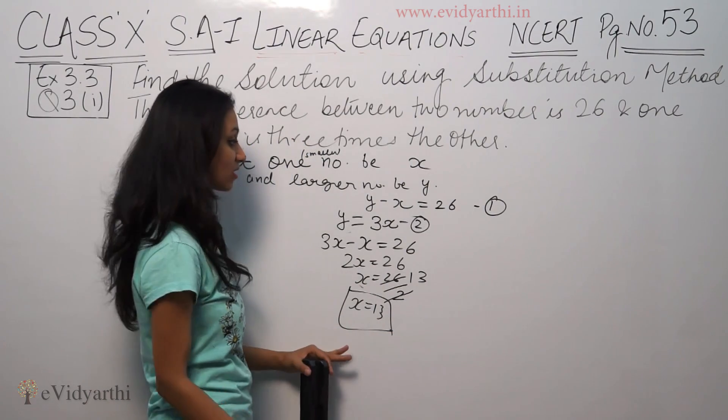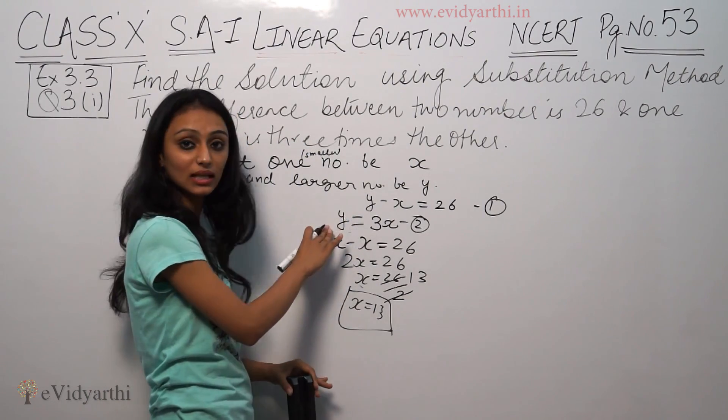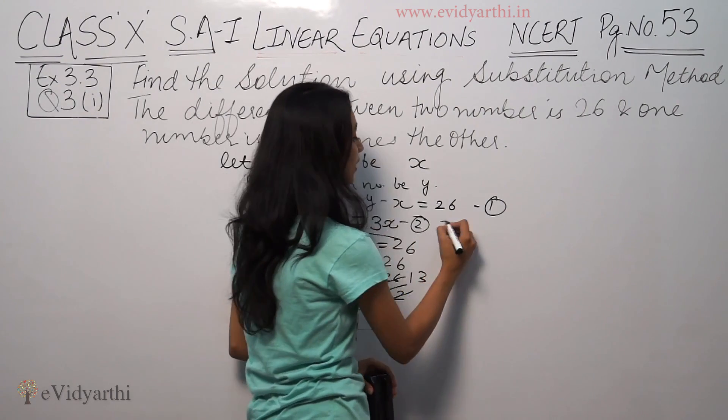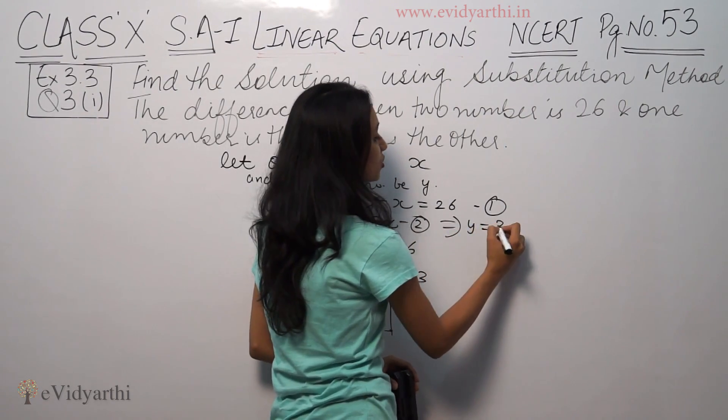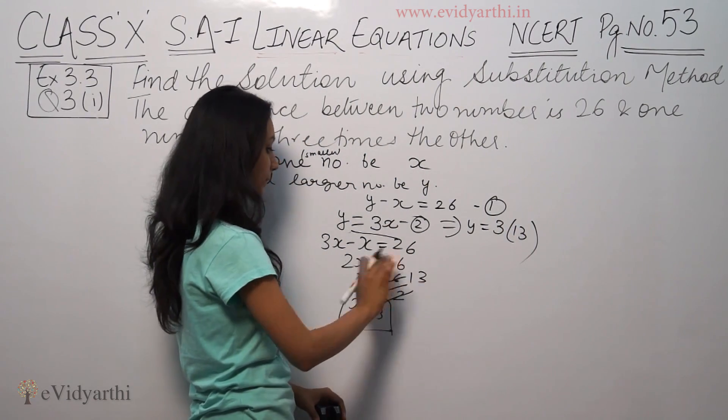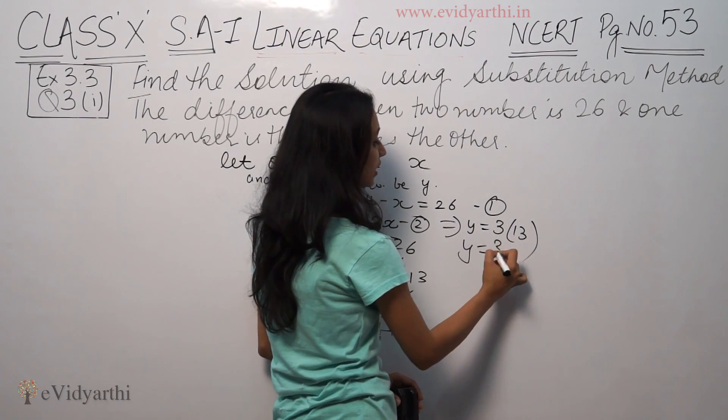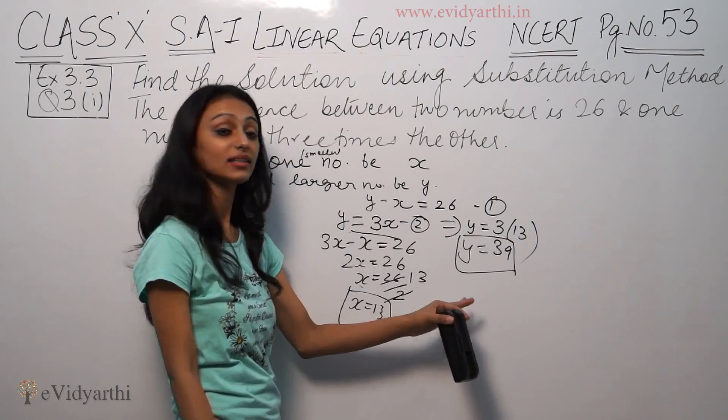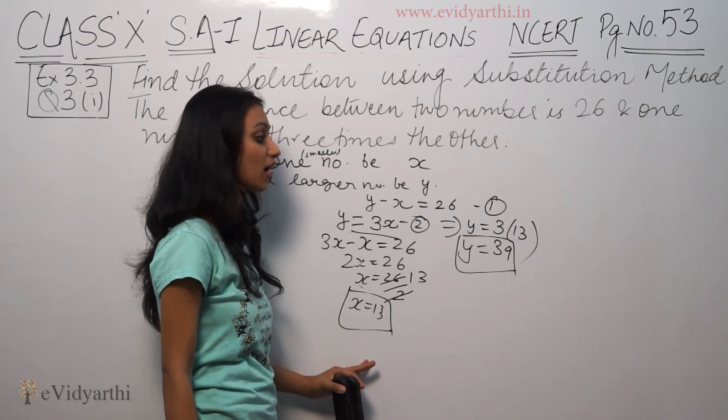From the second equation, y is equal to 3x, so y equals 3 times 13, which equals 39. The two numbers are 39 and 13.